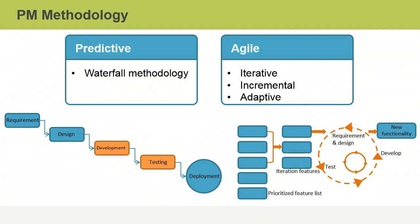Predictive life cycles are plan driven and change is not encouraged except as a way to prevent defects or to correct non-conforming project work. The time, cost, and scope requirements are determined as early in the project life cycle as possible. Then, the project would proceed according to the plan.